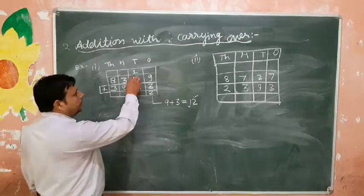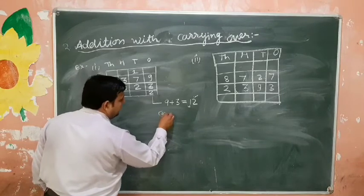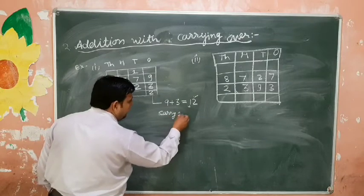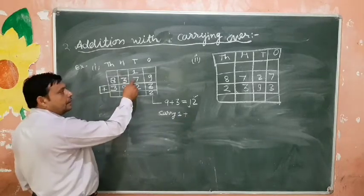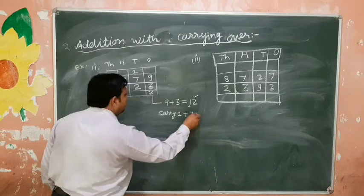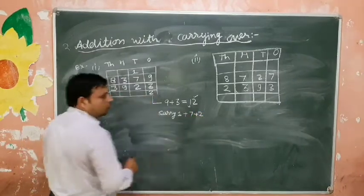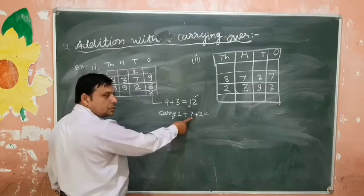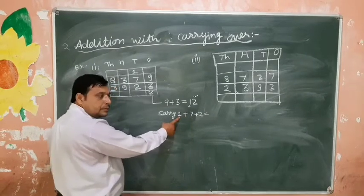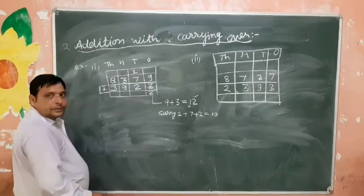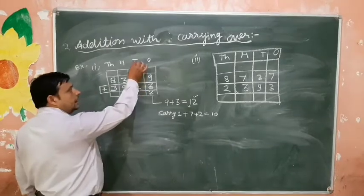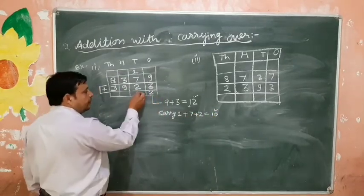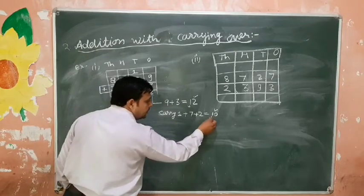Now adding the tens place: carry 1 plus 7 plus 2 equals 10. Write the tens place answer as 0, and carry 1 to the hundreds place.